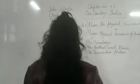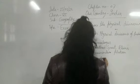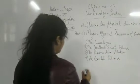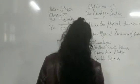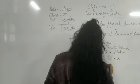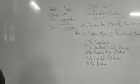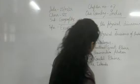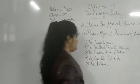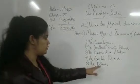The fourth division is the Coastal Plains, and the fifth is the Islands. So these are the major physical divisions of our country India: the Himalayas, the Northern Great Plains, the Peninsular Plateau, the Coastal Plains, and the Islands.